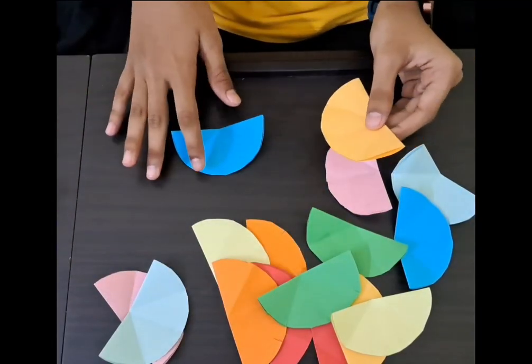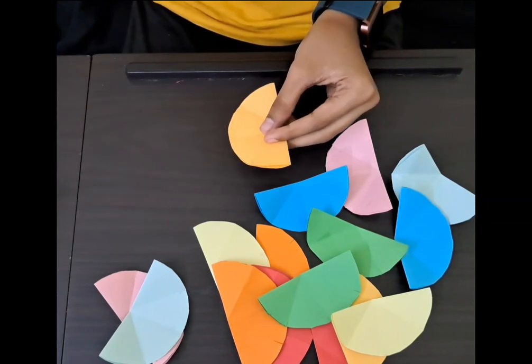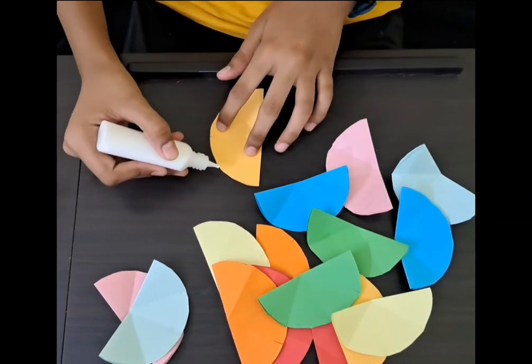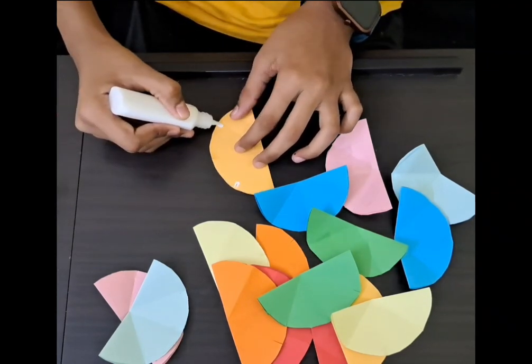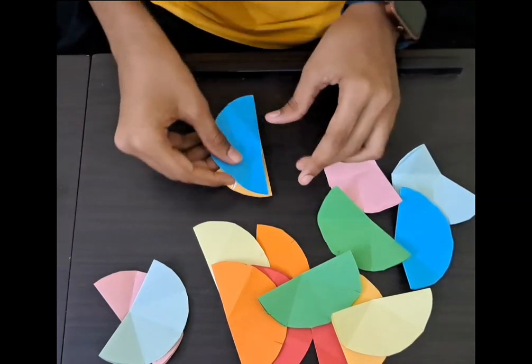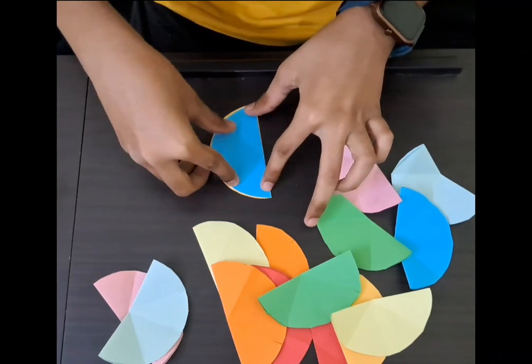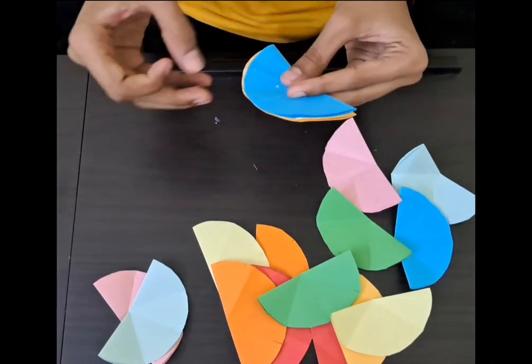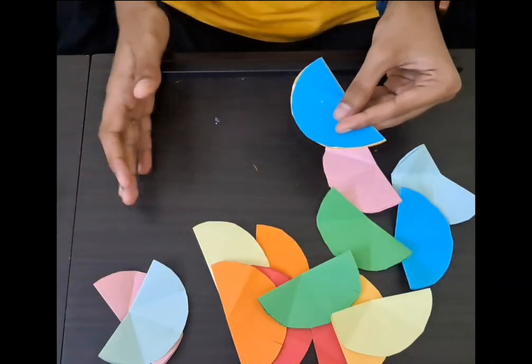Now see, I have done the same for all. The next step is take the glue and dip it. Now apply glue on this part of the paper. Take another one. Now stick it in such a manner that the glue is attached. Do the same step for remaining all.